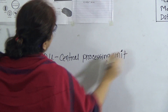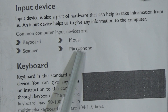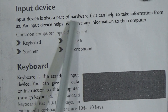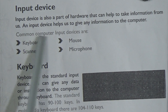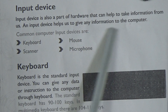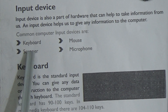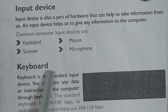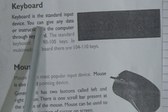There are some kinds of input devices: keyboard, scanner, mouse, and microphone. An input device is a part of hardware that helps to take information from us and give any information to the computer. Common computer input devices are keyboard, mouse, scanner, and microphone. The keyboard is the standard input device — you can give any data or instructions to the computer through the keyboard.